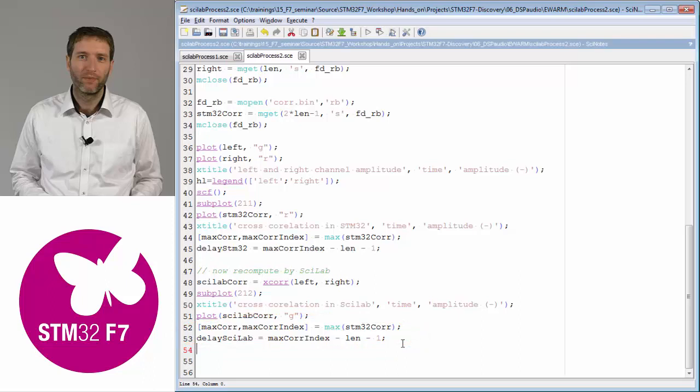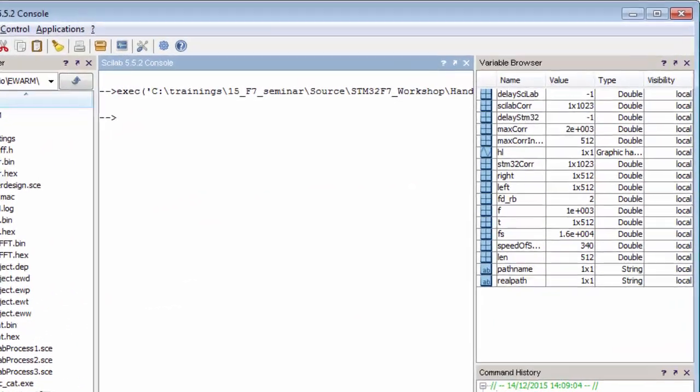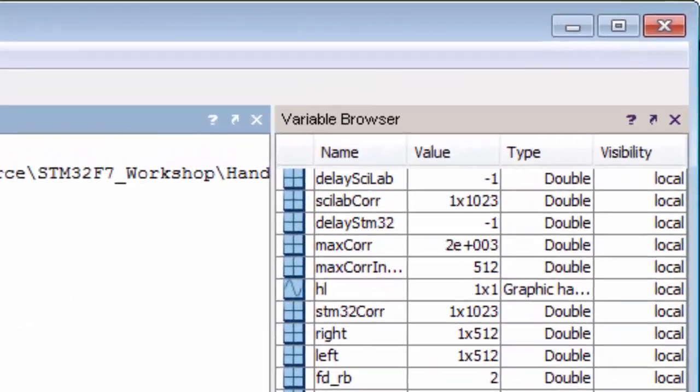Then in the console, you have the variable browser, something like a watch window. This delay here is minus one, which I computed by Scilab. I also computed the delay of the correlation generated by STM32. It's also minus one. So in this particular case, we've seen that the simulation works pretty well.